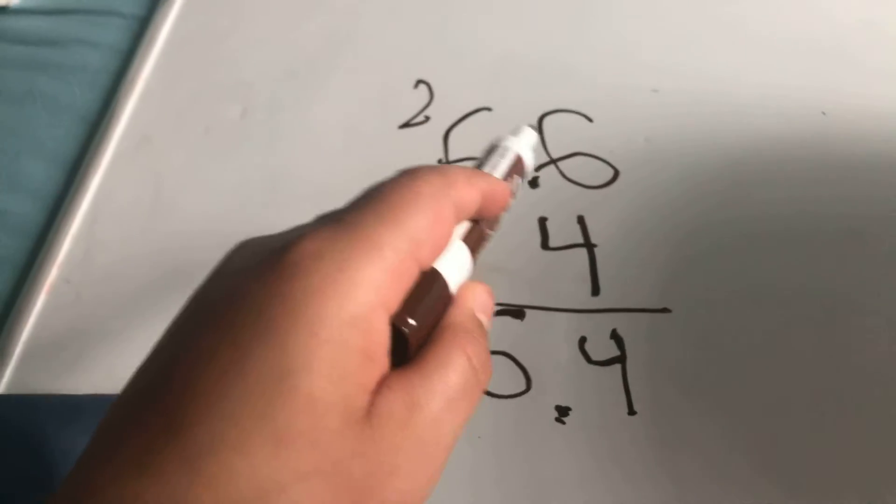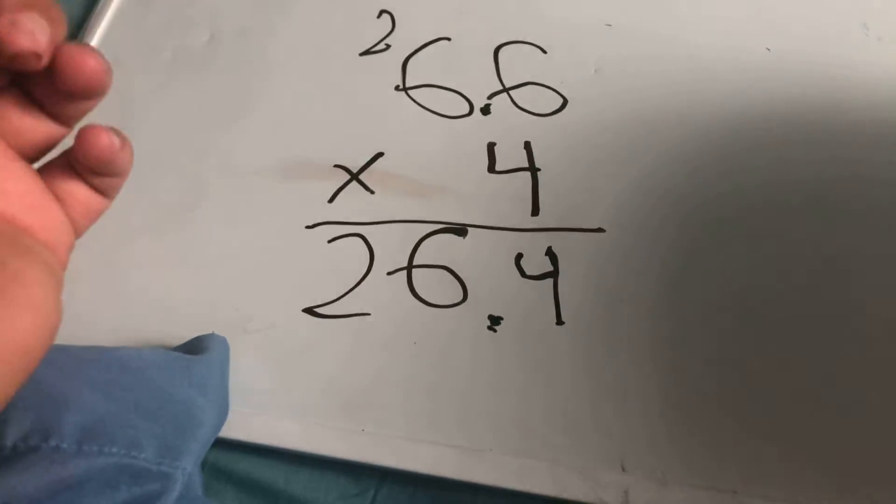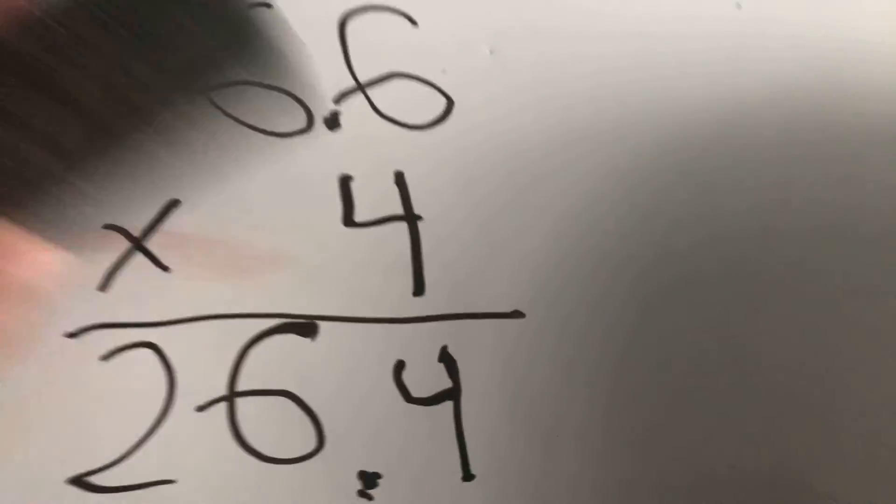This is multiplication of two-digit decimals by one digit. Now let's try one more.